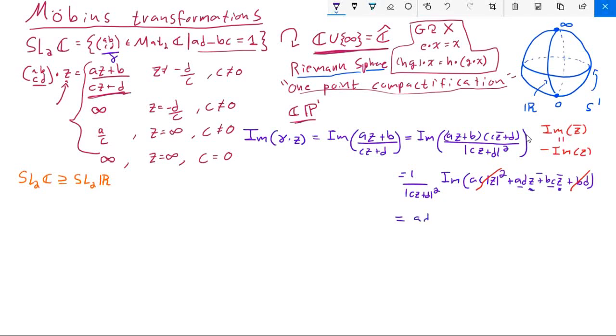So altogether, I get AD minus BC multiplied by the imaginary part of Z, and this is all going to be over the norm squared of CZ plus D. And since AD minus BC, well, that's just the determinant of the matrix gamma, and we're assuming in this case that our determinant is equal to one. Therefore, AD minus BC is one, so we find that we have the imaginary part of Z over CZ plus D squared norm.